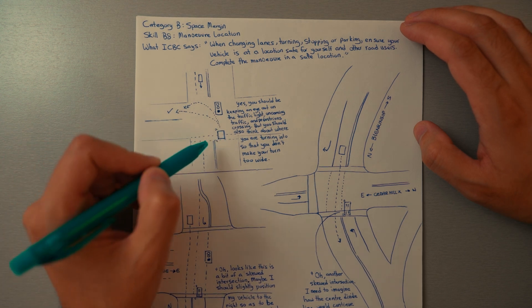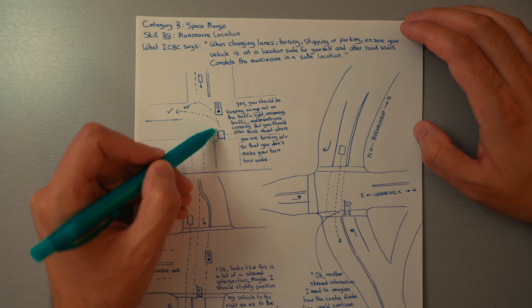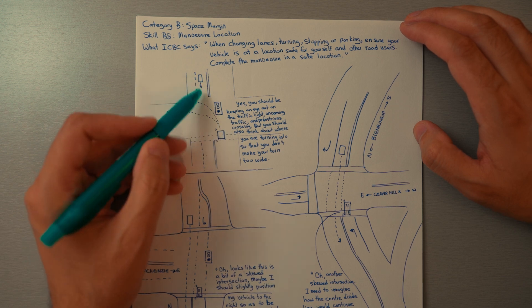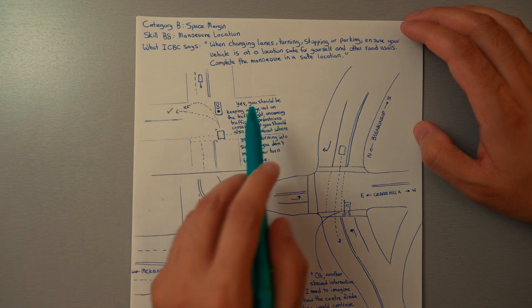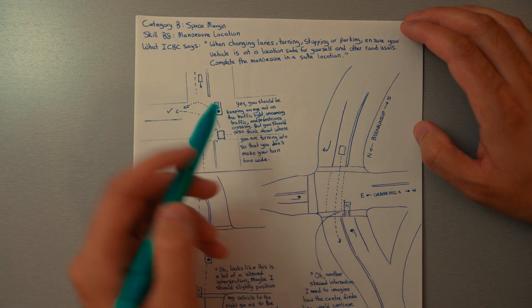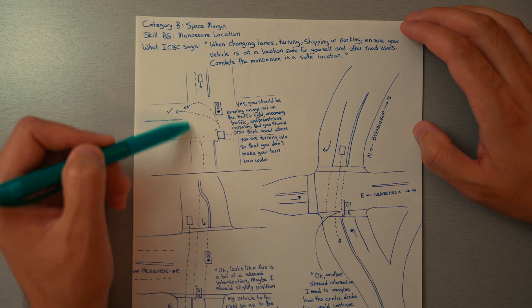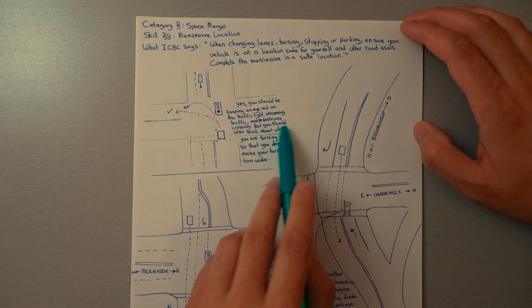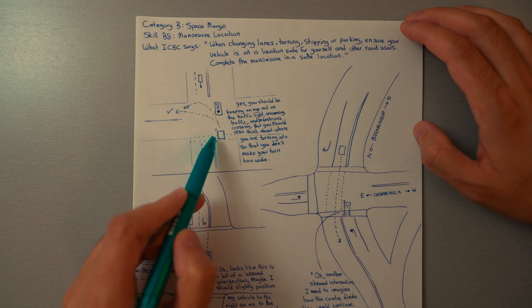We're coming up to make a left turn at an intersection, positioned in our waiting position, waiting for oncoming traffic to come through. You should be keeping an eye on the traffic light, oncoming traffic, and pedestrians crossing. But you should also be thinking about where you're turning into so that you don't...